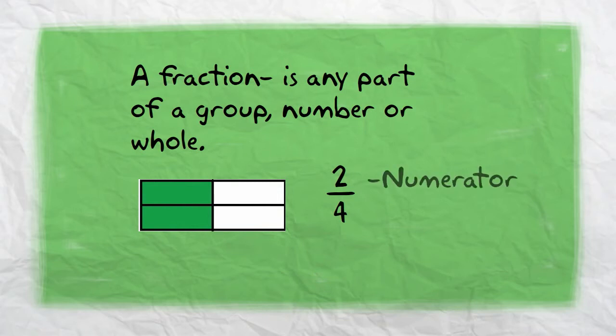The 2 is the numerator, which is the top number, which represents the parts of the whole, and the 4 is the denominator, which equals how many parts equal the whole.